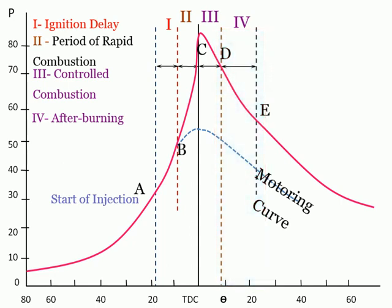Physical factors affecting ignition delay include: intake air temperature and pressure, engine speed, combustion chamber design, swirl rate, oxygen concentration, and Cetane number of fuel.